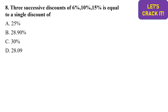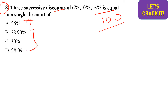The eighth question involves successive discounts: three successive discounts of 6 percent, 10 percent, and 15 percent. We need to find the net final discount from the given options. Let the initial price be 100 units. After a 6 percent discount, it becomes 94 rupees. After a 10 percent discount on 94, it becomes 0.9 × 94 = 84.6.